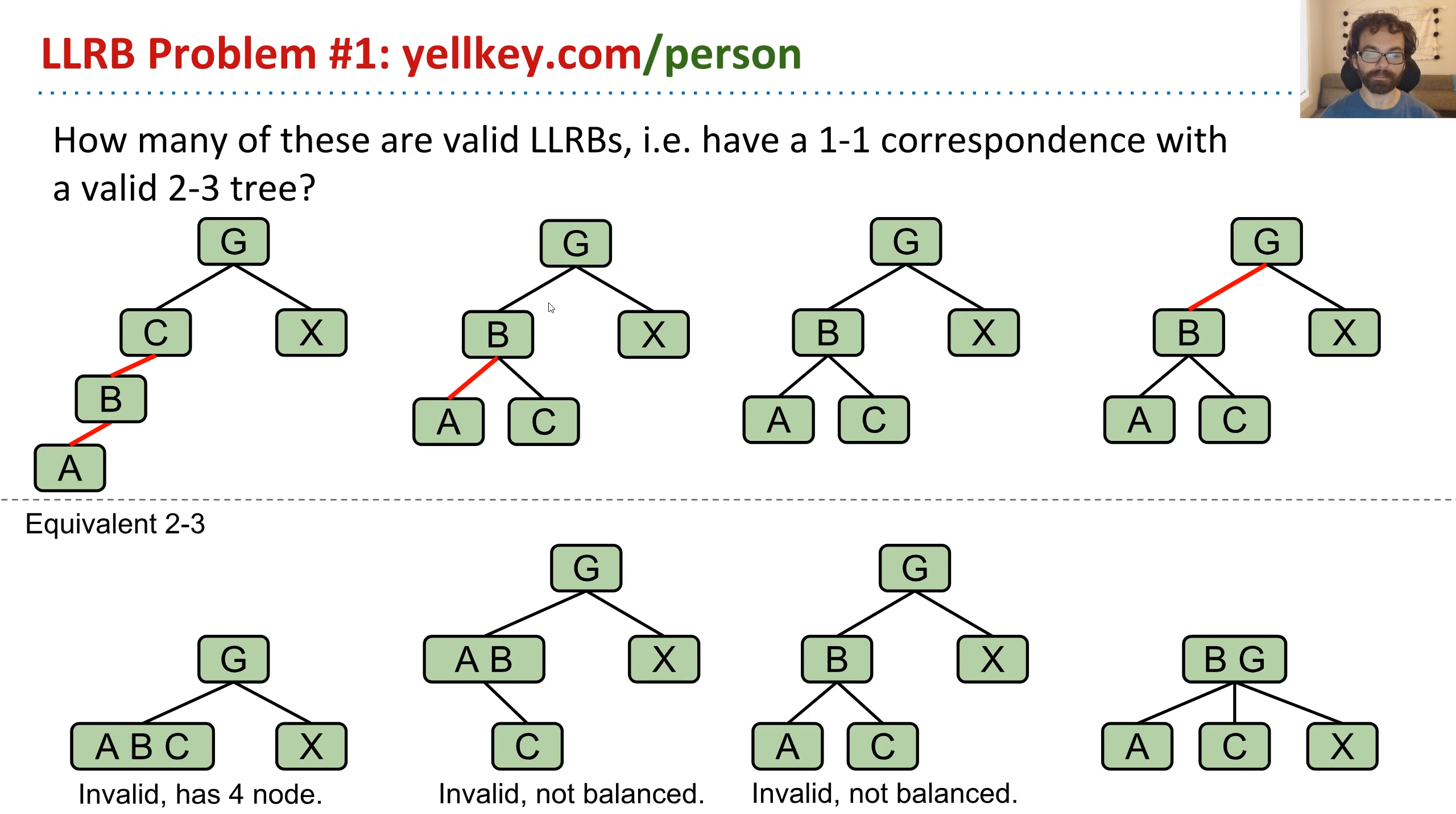How about this next one? So this one's a little tricky, but if we look at the corresponding 2-3 tree, we would get G as the root, AB as the left child, X as the right child, and then C is the only child of AB. And there's a few problems here. Most fundamentally to me is that it's not balanced. Remember that in a 2-3 tree, every leaf must be the same distance from the root. But here, X has distance 1, and C has distance 2. We actually have another problem, which is that AB should have three children, but there's only one child. So that's another big problem. But to me, the number one thing that jumps out is that it is not balanced.